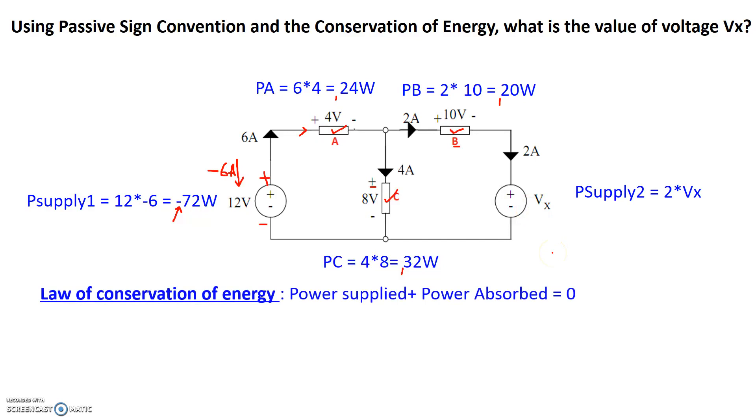Now, based on the law of conservation of energy, the total power supply must be equal to the total power absorbed. So we basically start collecting the power supply, which is negative 72 watts, 24 watts absorbed, 20 watts absorbed here, 32 absorbed here, and 2 times Vx absorbed here. So we basically have that equation right there. Now if we simplify that, we get 4 plus, so all of this simplifies to 4, 4 plus 2Vx is equal to 0.